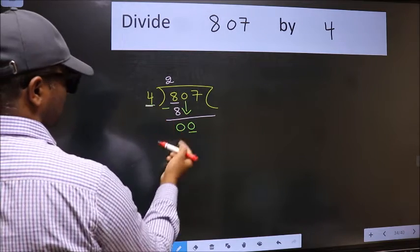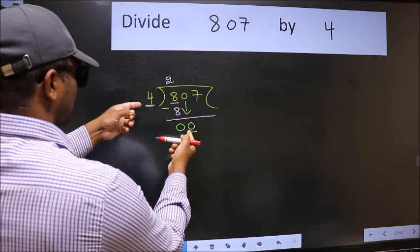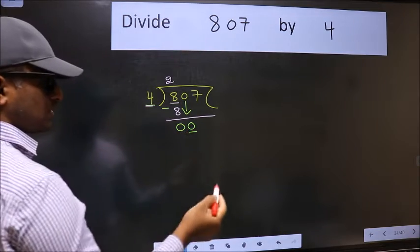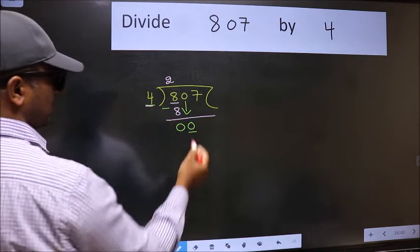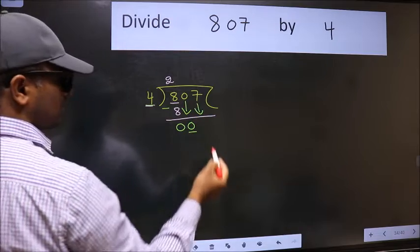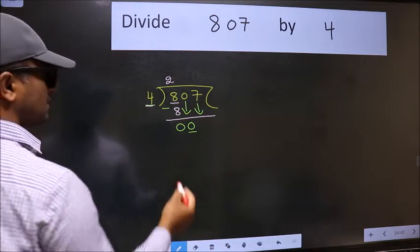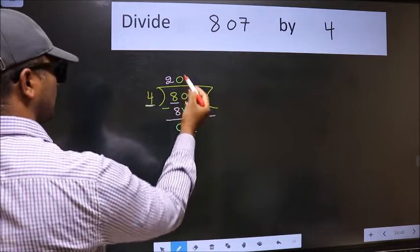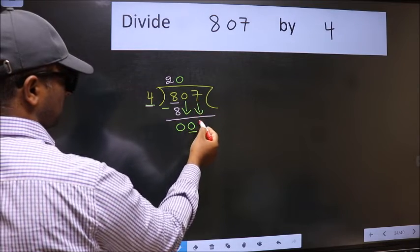Now here we have 0 and here 4. 0 is smaller than 4, so we should bring down the second number. The rule to bring down the second number is we should put 0 here, then only we can bring this number down.